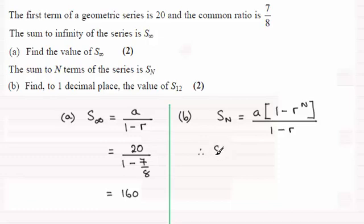So for this one, the sum of the first 12 terms is going to be the first term a which is 20, multiplied with 1 minus 7/8 to the power n, n being 12. Then this is divided by 1 minus the common ratio, 1 minus 7/8.